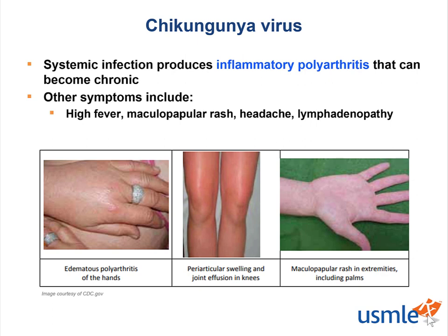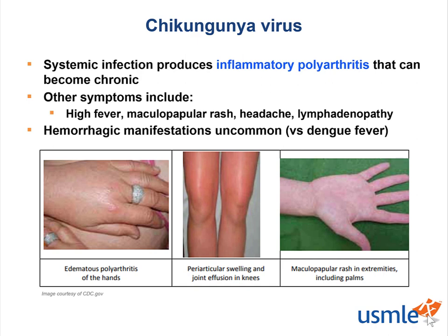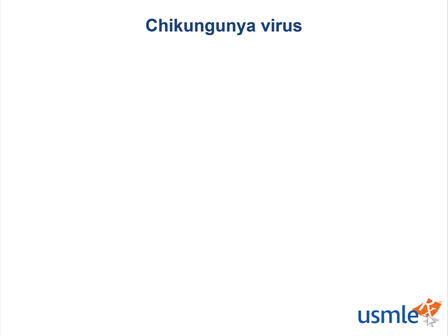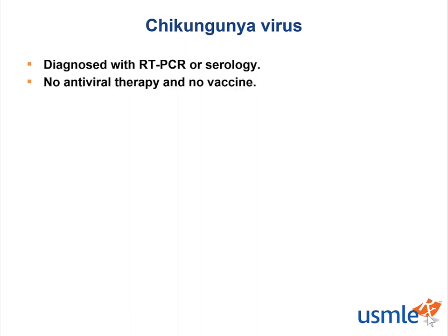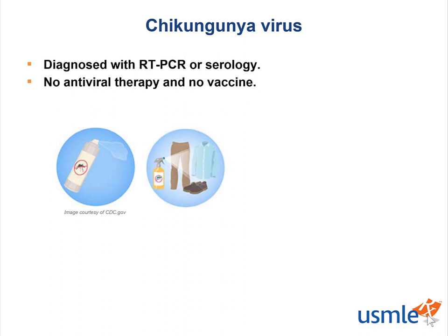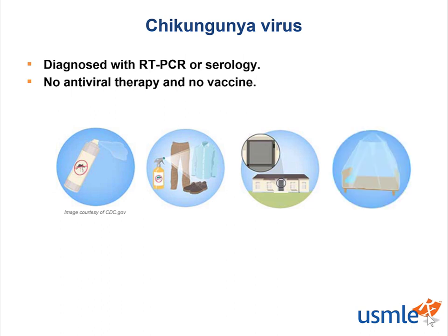Unlike dengue virus, which can have bleeding, hemorrhagic manifestations are uncommon in chikungunya virus. We can diagnose chikungunya virus with reverse transcription polymerase chain reaction (RT-PCR) or serology. At the current time, there is no antiviral therapy and no vaccine, which is why public health campaigns for mosquito control are important — along with personal protection such as using repellent, wearing long sleeves and pants, installing or repairing window and door screens, and using mosquito nets.